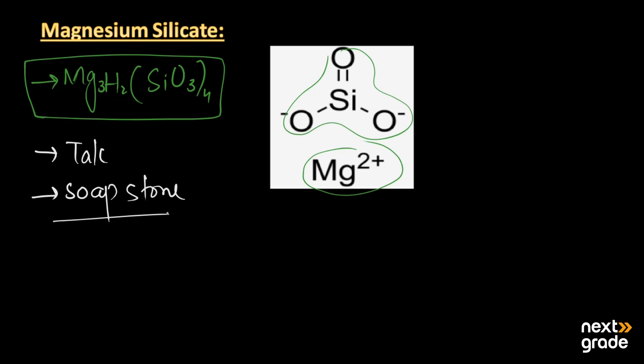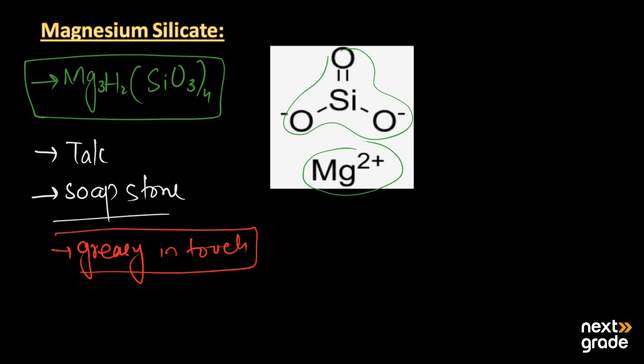Magnesium silicate has several properties. Physically, it is greasy to the touch — this is the first property. When you handle it, it gives a greasy-like feeling. Magnesium silicate has been widely used in different products.